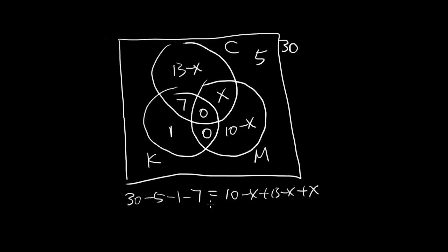So here we do a little algebra. We combine the terms, minus X plus X will cancel, so here's 23 minus X. And on the left side we have 17, so 17 equals 23 minus X, so X equals 6.